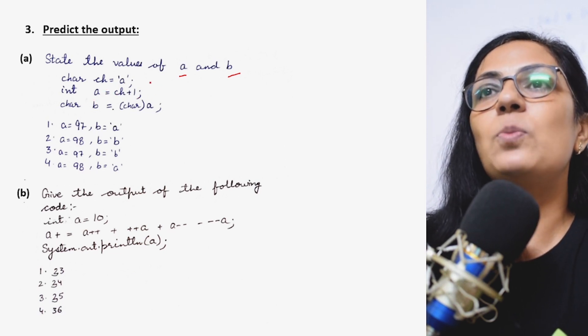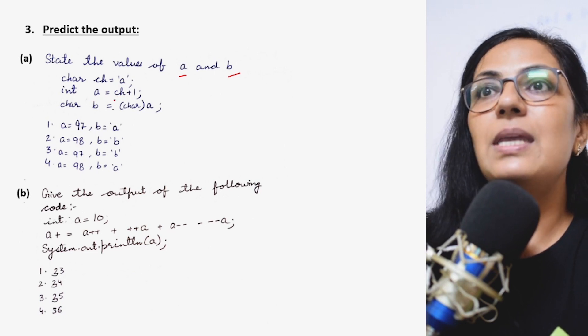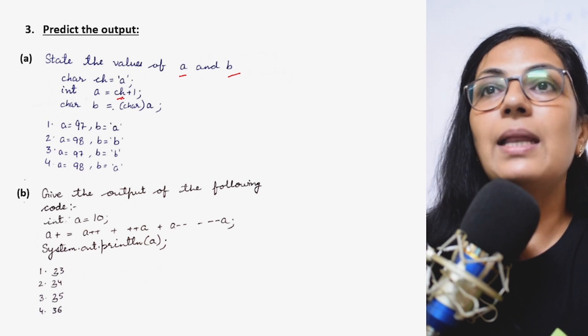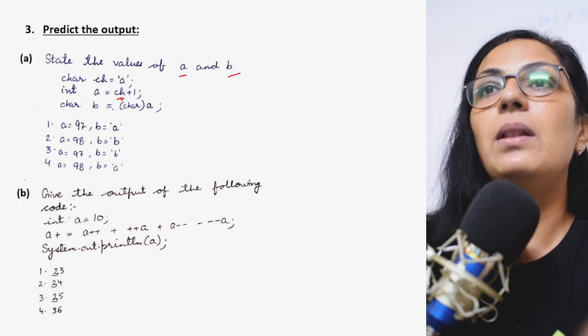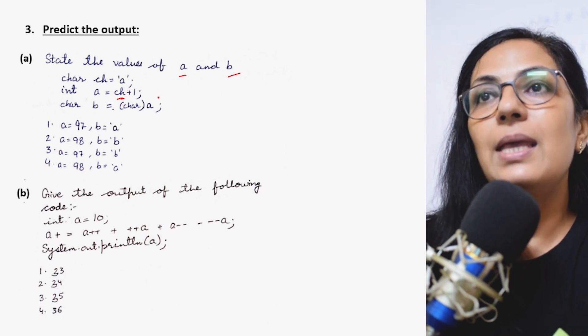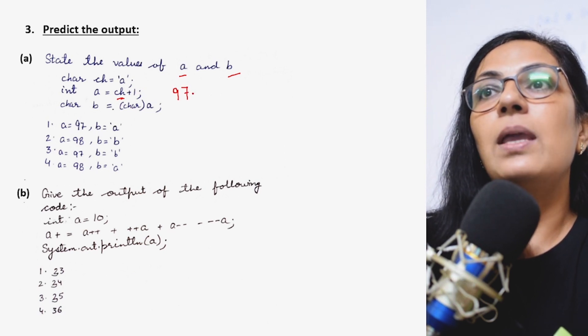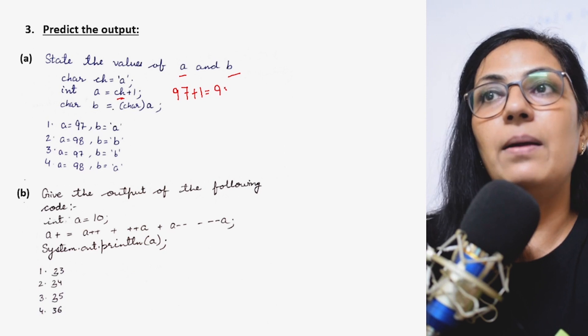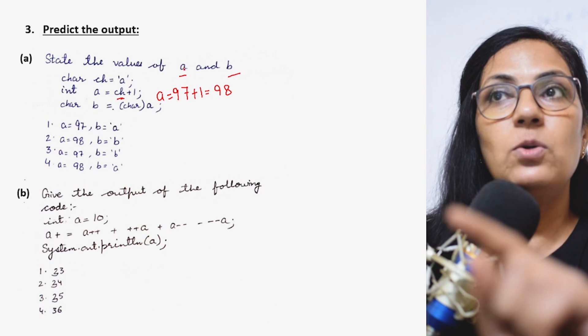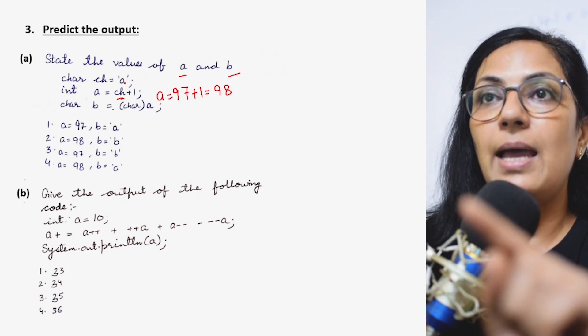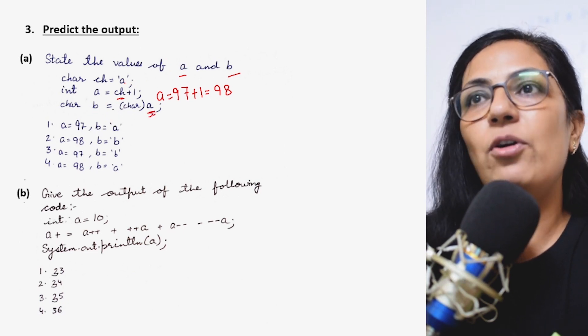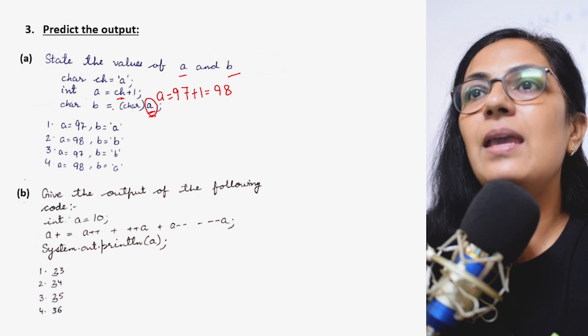Int a equals to ch plus 1. Now although the ch value is a character value, whenever we want to store that character in integer variable, the ASCII code of that character is used. So the ASCII code of lowercase a is 97. So here 97 plus 1 it will become 98. That means the value of variable a - children please don't get confused, this a is the character constant and this a is the variable.